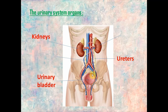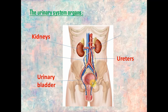This urine moves down through the two long tubes called ureters and goes to the urinary bladder. It stays in the urinary bladder for a while until we get rid of it and it goes out of our body. So the blood goes into the two kidneys, they filter the blood, then the urine moves through the ureters to the urinary bladder.